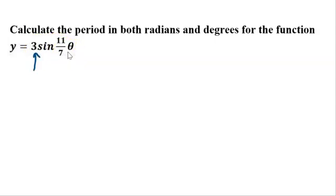This 3 represents the amplitude, and this number here, call it the b usually, b times x or b times theta, represents, is related to the period.